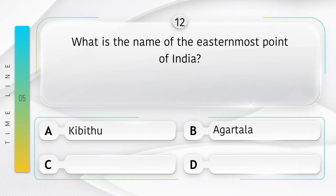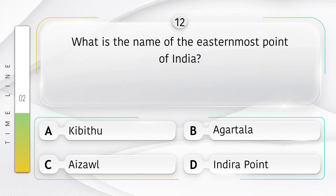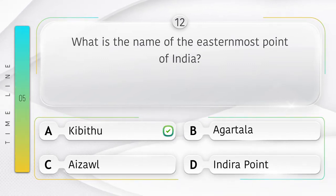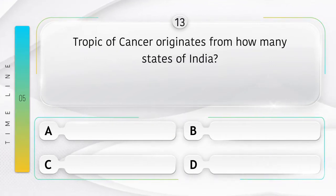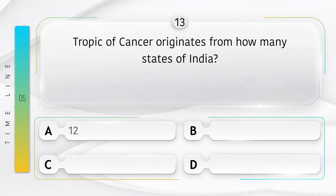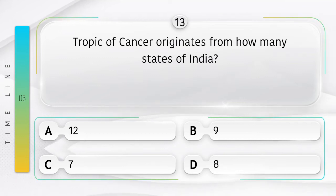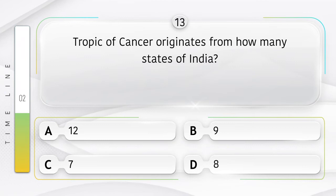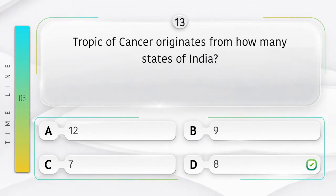What is the name of the easternmost point of India? Option A: Kibithu, B: Agartala, C: Isol, D: Indira Point. Answer is option A: Kibithu. Tropic of Cancer originates from how many states of India? Option A: 12, B: 9, C: 7, D: 8. Answer is option D: 8.